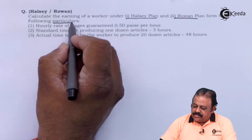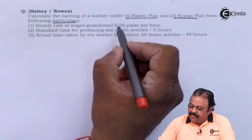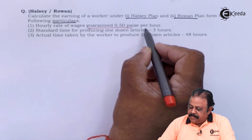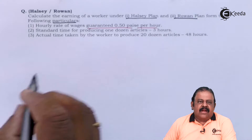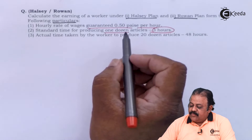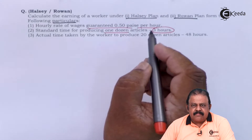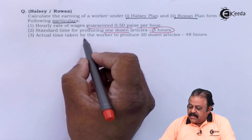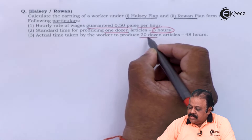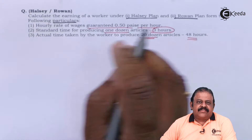Hourly rate of wages guaranteed: 50 paise per hour. Standard time for producing one dozen articles: three hours. Actual time taken by the worker to produce 20 dozen articles is 48 hours.